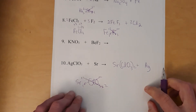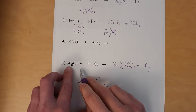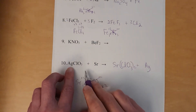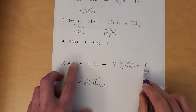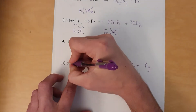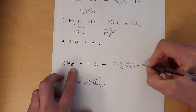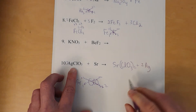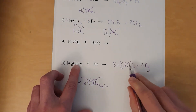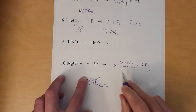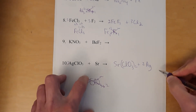Having done that, now we can balance. One silver, one silver; one chlorate vs. two chlorates — so put a 2 here, which means there's a 2 here. Two silver, two silver; two chlorate, two chlorate; one strontium, one strontium. There we go, we're done. That finishes out the single displacement reactions.